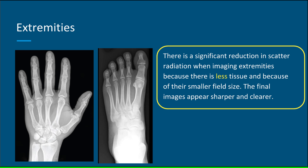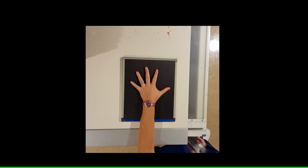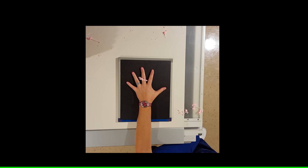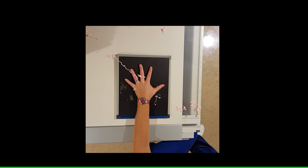Extremities: There is a significant reduction in scatter radiation when imaging extremities because there is less tissue and because of their smaller field size. Here is an example of a hand and how little scatter radiation it receives during an exposure.